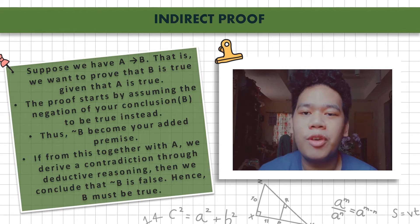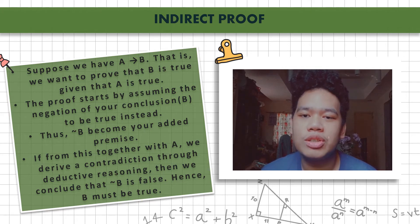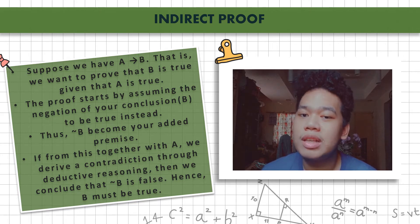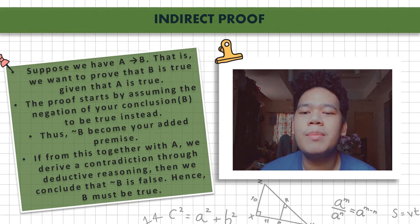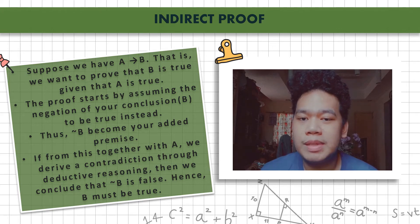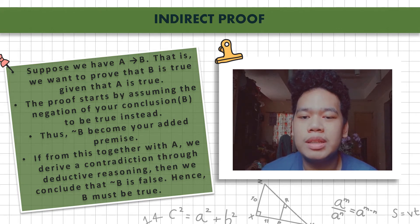If from the added premise together with A you derive a contradiction through deductive reasoning, then we conclude that not B is false, and hence B must be true. Always remember: when you're struggling to show that B is true, you can always try to show that not B must be false instead.